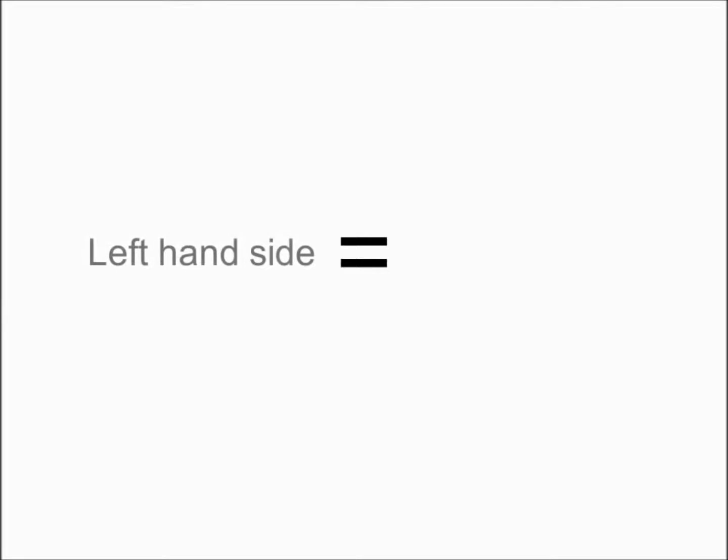At the mere mention of the word algebra, the vast majority of people glaze over and tune out. But bear with me a while, because I think you'll easily understand what we have to say. The first rule of algebra concerns the equal sign, so named because what is on the left-hand side of an equation must equal what is on the right-hand side. It doesn't matter how simple or how complex the equation is — if there is an equal sign, that is the rule.